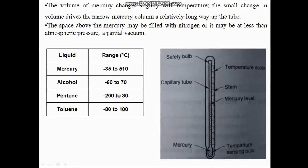When we observe this thermometer, we see it is only partially filled with mercury — not completely full. It is not fully filled because when temperature changes the liquid expands and we need space for it to rise. The remaining space is filled with nitrogen gas under a partial vacuum, so that when temperature changes the liquid expands and rises up, and when temperature is reduced the liquid falls back down.